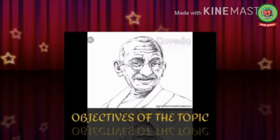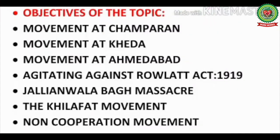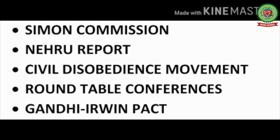Before going through the lesson, let's discuss the objectives of the topic. The objectives are to understand the movement at Champaran, the movement at Kheda, the movement at Ahmedabad, and the agitation against the Rowlatt Act of 1919 and Jallianwala Bagh. In this module we are going to discuss Mahatma Gandhi's movements at Champaran, Ahmedabad, Kheda, and his protest against the Rowlatt Act.